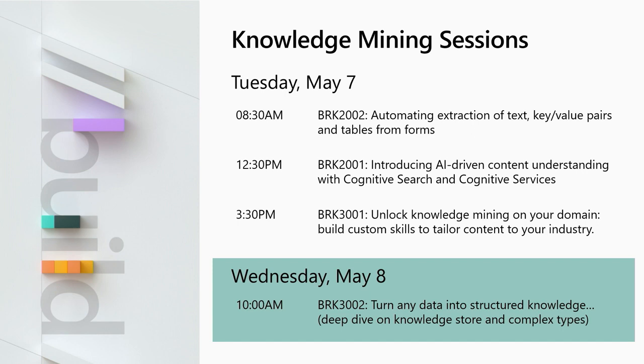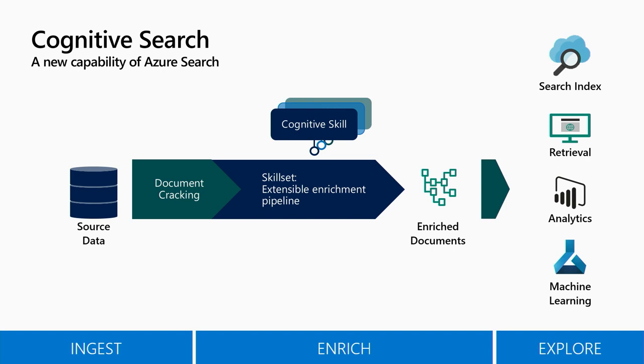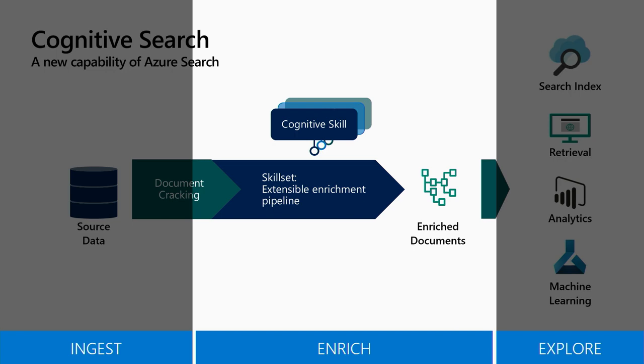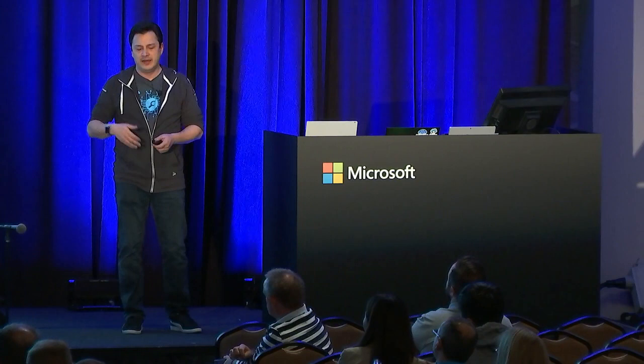Today we'll be focused on the skill set, which is where we enumerate each of the enrichment steps. There are four elements you have to work on. You define a data source — an object that holds information about how to connect to your data. If you connect to blob storage it will have your connection string and the container. If you connect to Azure SQL it will have the query you want to run. You specify the information you need and say, okay, that's a data source I can connect to.